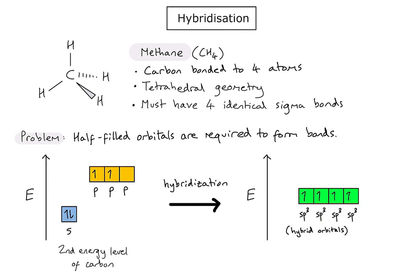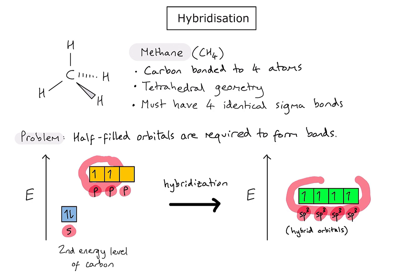Because we formed those orbitals by combining an s orbital and three individual p orbitals, we call each of the resulting orbitals an sp³ hybrid orbital. This solves our problem: initially carbon only had two half-filled orbitals suggesting it could only form two bonds, but through hybridization we now have four half-filled orbitals, meaning it can form four identical bonds.